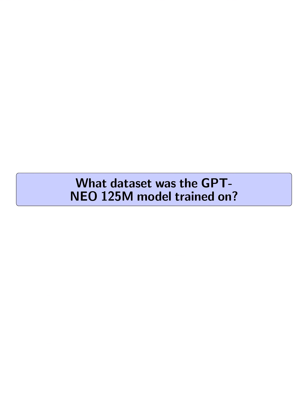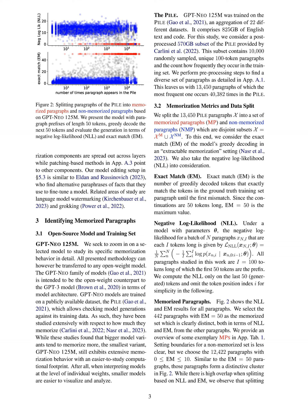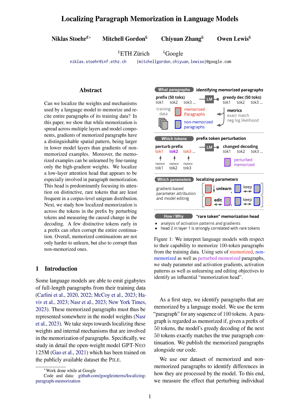What dataset was the GPT-NEO-125M model trained on? The GPT-NEO-125M model was trained on the Pile dataset, which is an aggregation of 22 different datasets comprising 825 gigabytes of English text and code. For the study discussed in the paper, a post-processed subset of the Pile dataset containing 10,000 randomly sampled, unique 100-token paragraphs was used. This subset was provided by the authors of the paper and underwent pre-processing steps to ensure a diverse set of paragraphs for analysis.